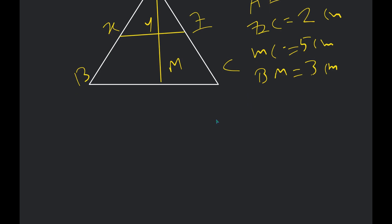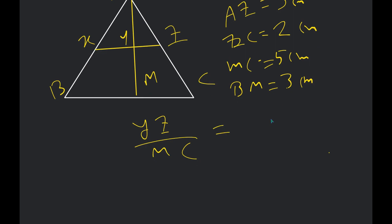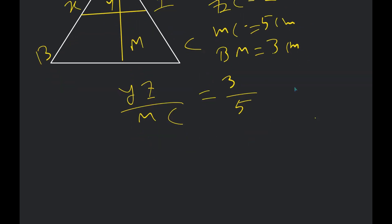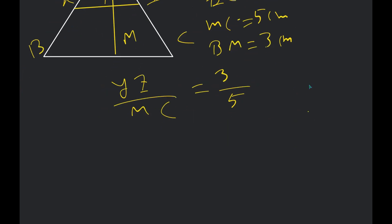So how will I do it? YZ divided by MC, correct? Is there any value given for YM? No, no value for YM. But BM is given as three, and MC is five — that is the ratio. Putting the value of MC as five centimeters, I find YZ equal to three centimeters.